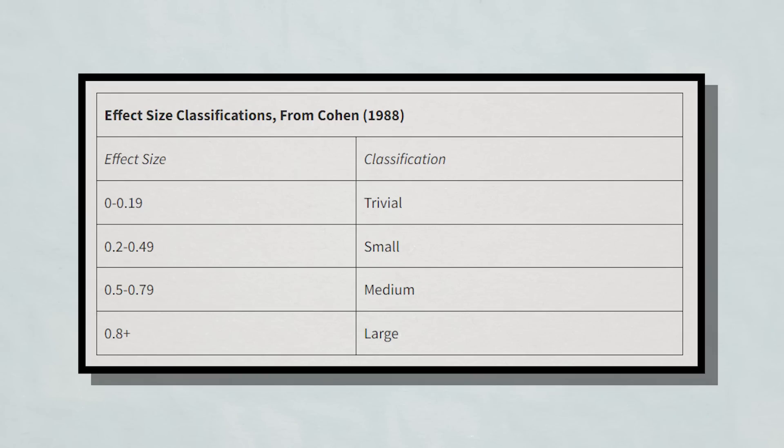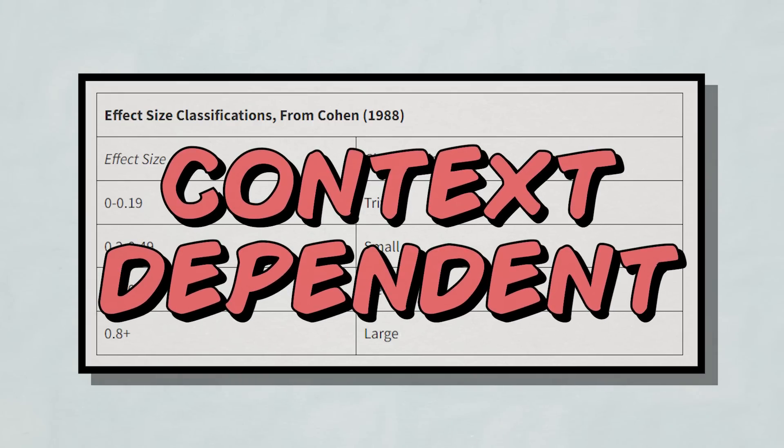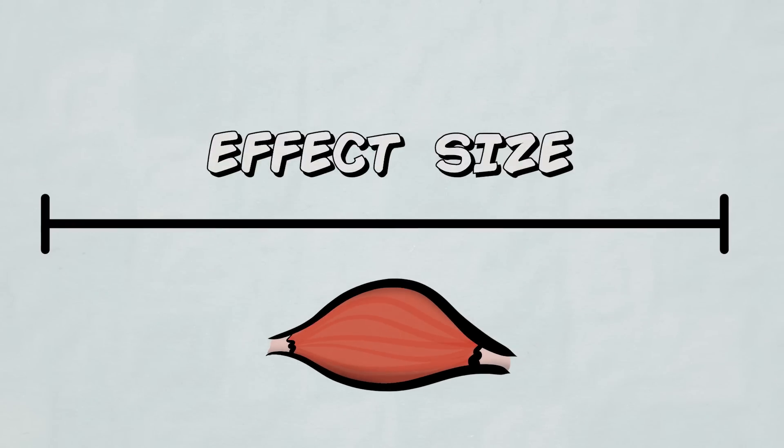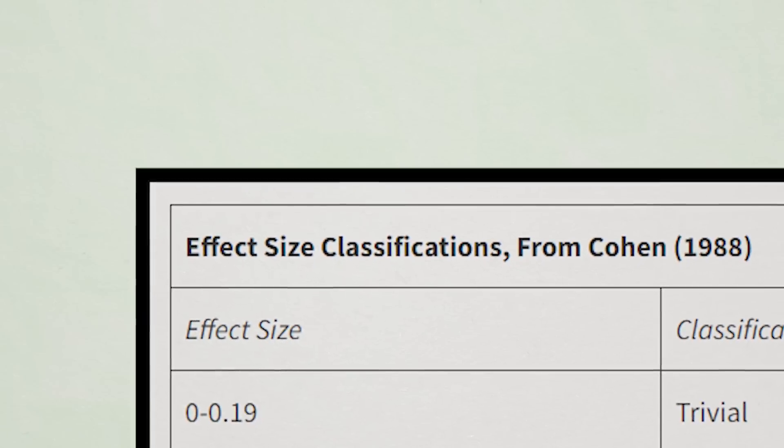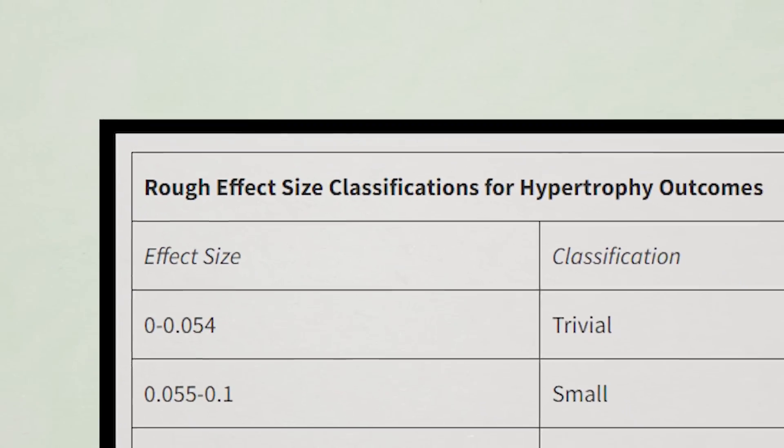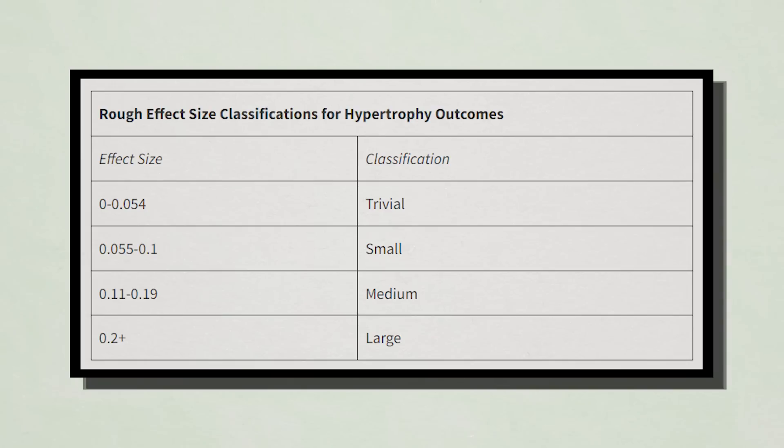Essentially, Greg argues that classifications require proper context of the data being interpreted, especially in something like hypertrophy, where small effect sizes are generally observed anyway, small increases to it can carry a lot more weight. With this in mind, using his super fitness science brain, Greg devised a new range of effect size classifications that might be more fitting for muscle hypertrophy outcomes.